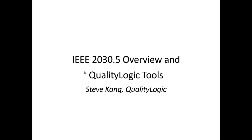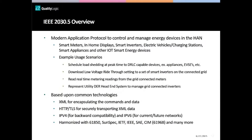I'm going to give you a brief introduction to IEEE 2030.5 — many of us refer to it as SCP-2.0 — give you a technical overview, and then talk about our test tools and how they support IEEE 2030.5 and DER. IEEE 2030.5 is what we consider a modern application protocol, really designed to control and manage devices and energy devices within the home.